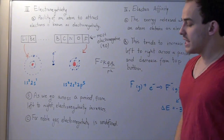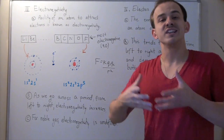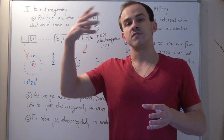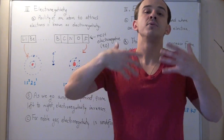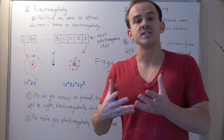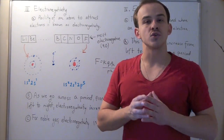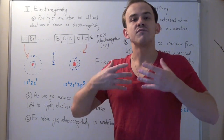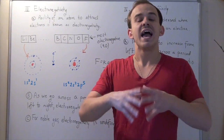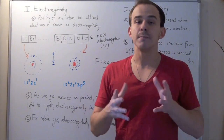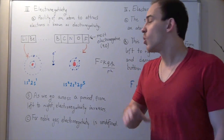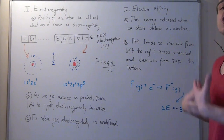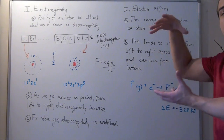Let's look at our final periodic trend: electron affinity. Electron affinity is the amount of energy released when an atom gains an electron. The only way to take an electron away from the outer shell of an atom is to input energy, because work must be done against the force of the protons in the nucleus attracting those outer electrons. So the reverse must also be true: whenever an atom gains an electron, energy must be released. That's exactly what happens when fluorine gains an electron — when fluorine goes from a neutral atom, gains an electron, to form an anion, energy is released and the energy level of the outer shell is lower.